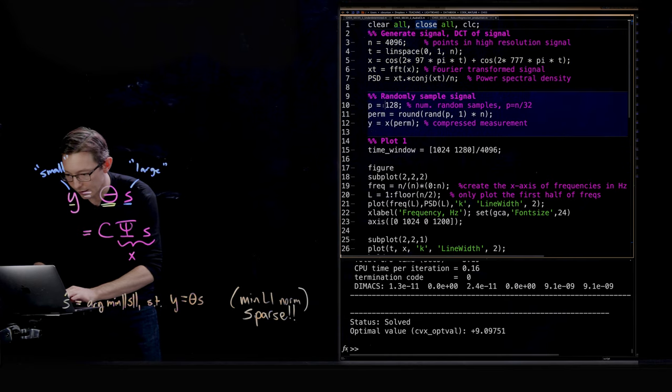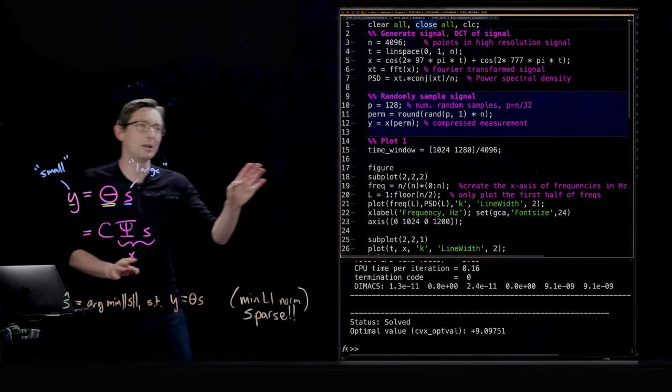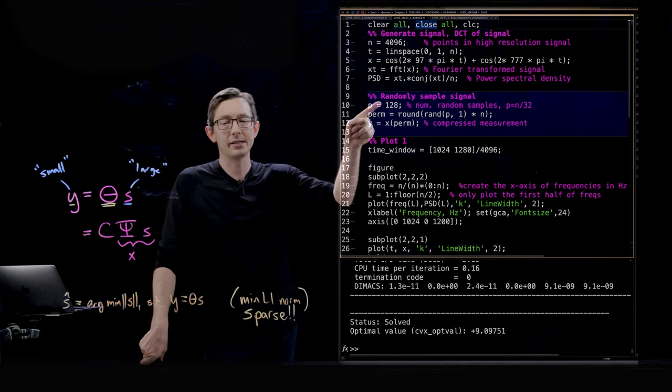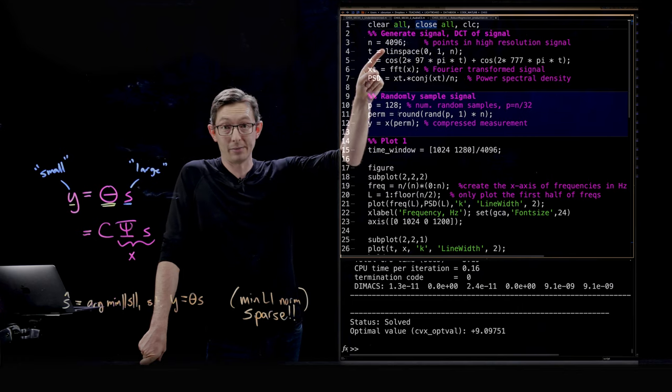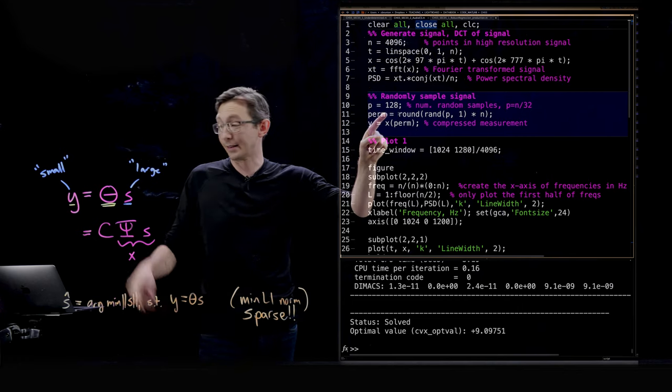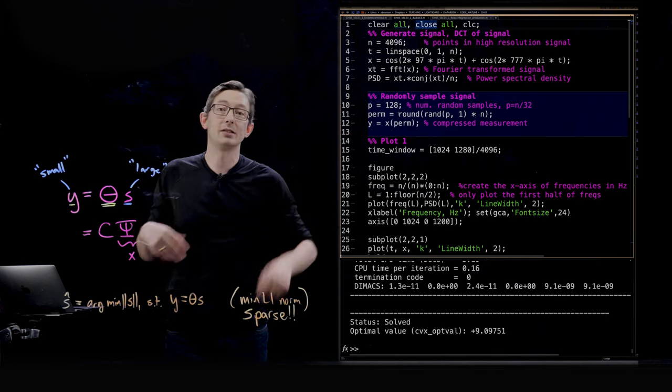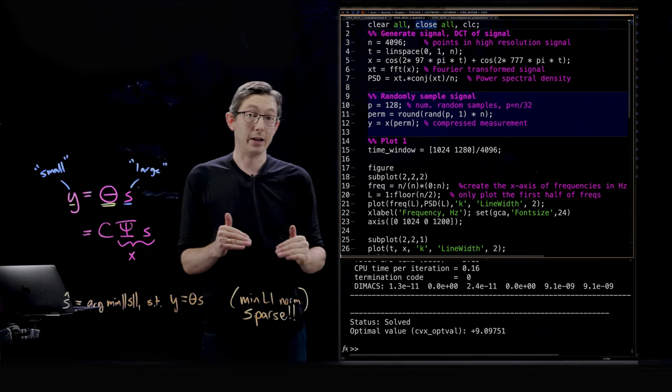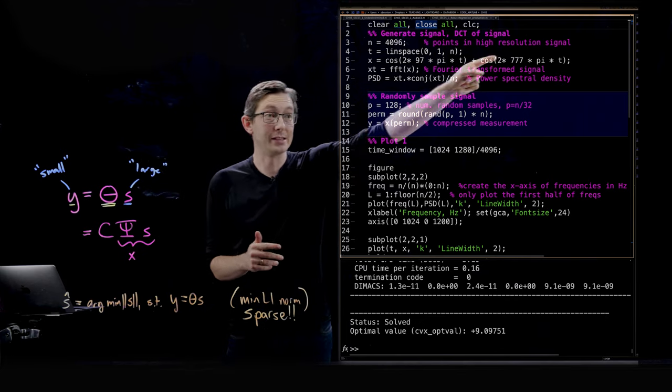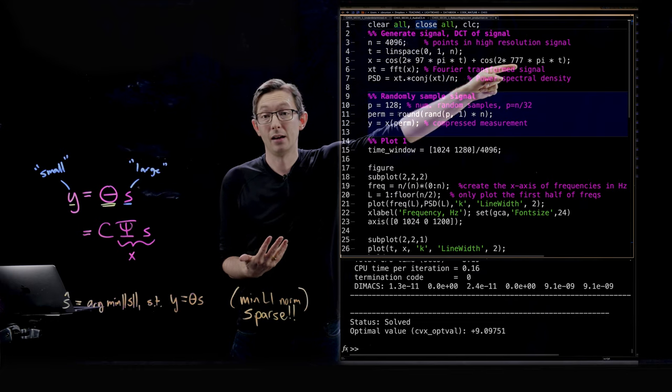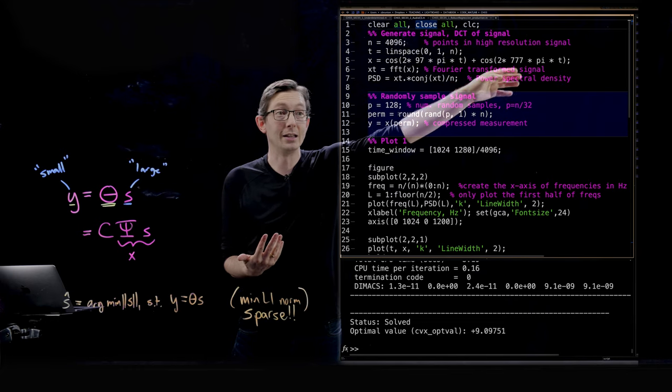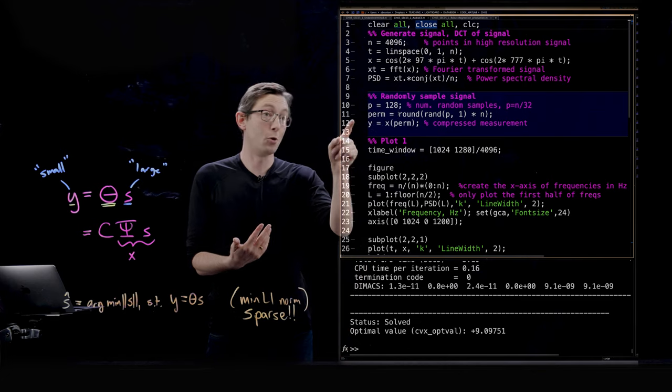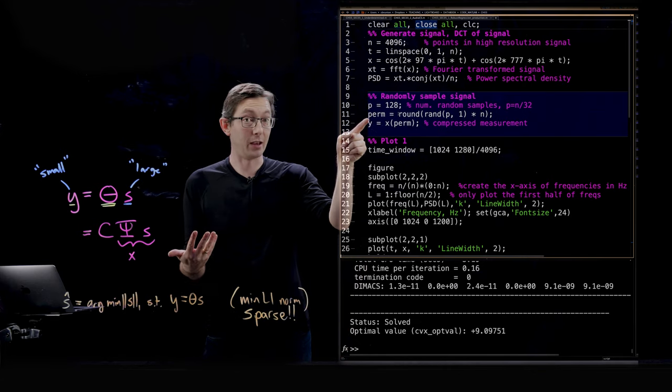The original, and then what I'm going to do here I showed you this randomly sampled signal, I'm only going to measure 128 of those 4096 points and that's going to be my downsampled measurement Y. So this is way below the Nyquist sampling limit for this 777 Hertz cosine wave. Normally I would need to sample much more than 128 samples per second.